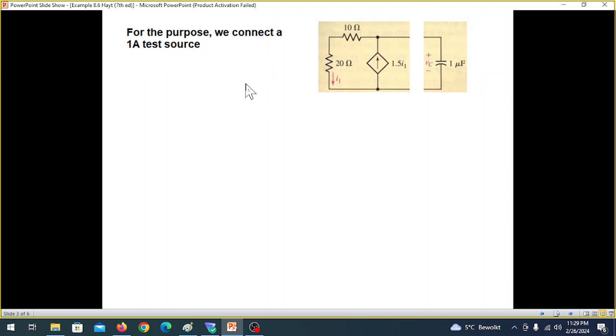So here, we'll connect a test current source as shown here. For this portion, we have connected a test current source. And what is the advantage? How do we find R equivalent with this is that we divide Vx divided by